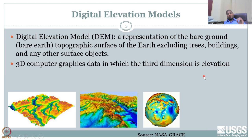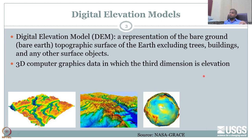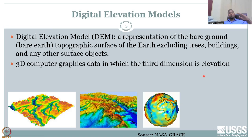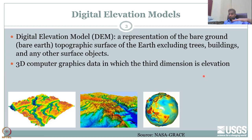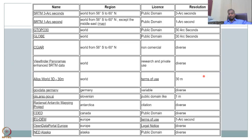So a digital elevation model is a representation of the bare ground of the earth, giving elevation with respect to zero level — sea level. There are multiple sources of data, and many are still being updated. Some databases are given for reference — just look at the names and the regions that have been expanded, and the resolutions have been increased.